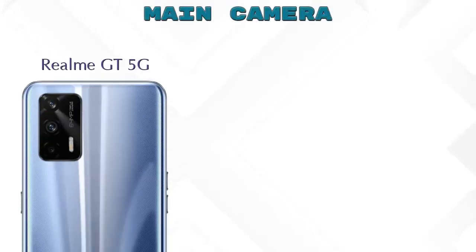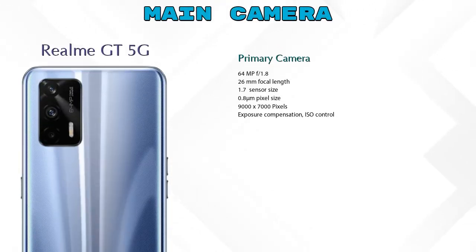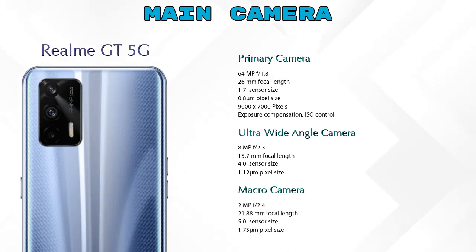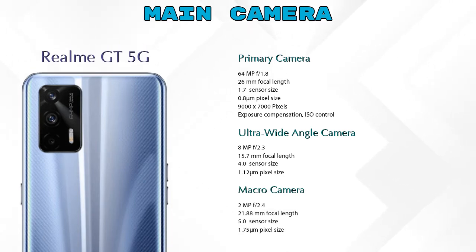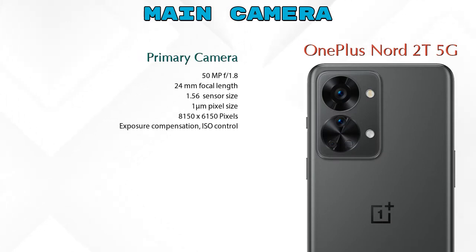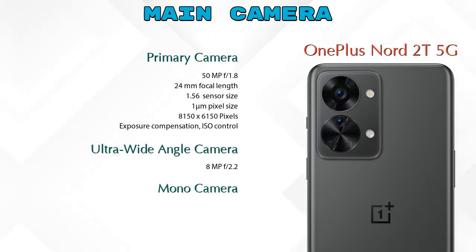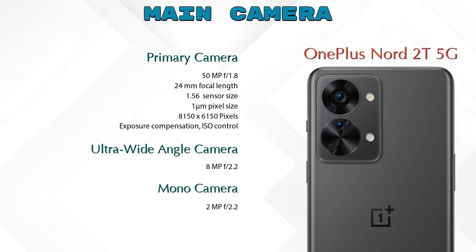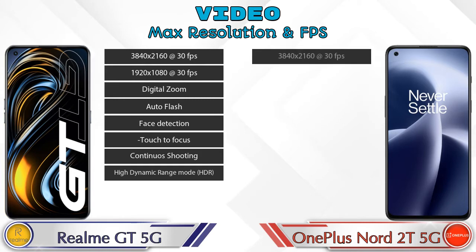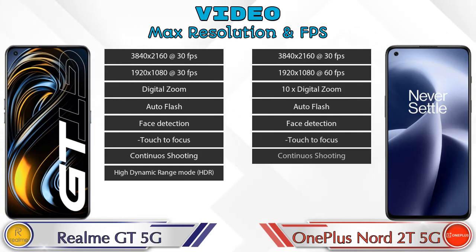The GT 5G has three rear cameras: a primary camera, an ultra-wide angle camera, and a macro camera. The Nord 2T 5G also has three cameras: a primary camera, an ultra-wide angle camera, and a mono camera. For video recording, both phones offer eight different types of features.